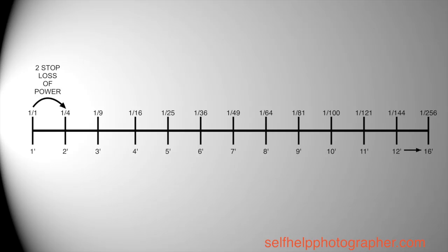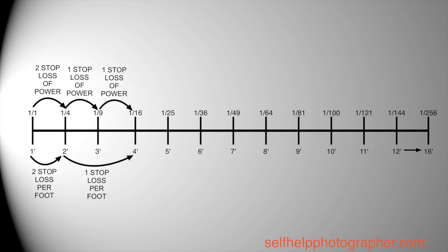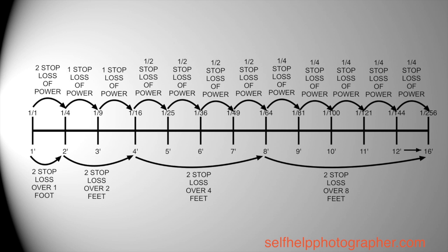Looking at this on a chart, a pattern starts to emerge. From one foot to two feet, you lose two stops of light — full power to one quarter power. Moving from two feet to three feet is just over one stop. Then another stop going to four feet. From four to five feet, you lose about a half a stop, and again from five to six feet, another half a stop. So in the first foot you lose two stops, then in the next two feet you lose two stops, then in the next four feet you lose two stops.